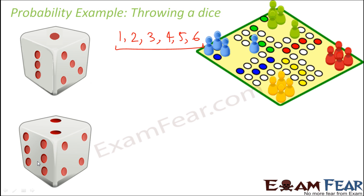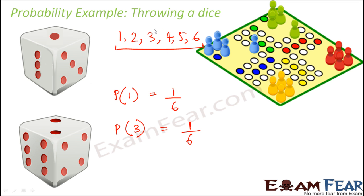So, what is the probability of each of these? If I ask you what is the probability that you will get a 1 when you throw a dice, the probability of getting 1 is 1 by 6 because there are 6 total possible outcomes and getting 1 is just 1 outcome out of those 6. Therefore the probability of getting 1 is 1 by 6. Similarly, the probability of getting 3 is 1 by 6, getting a 5 is 1 by 6, and getting a 6 is also 1 by 6 — because all of them are equally likely outcomes.